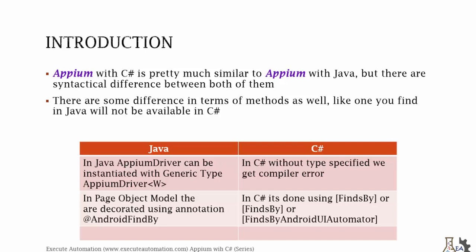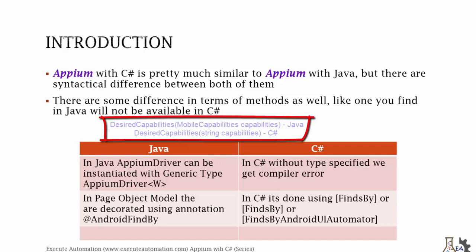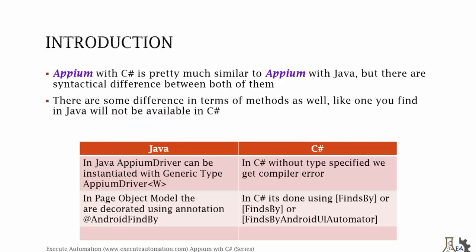Similarly, in Java's Desired Capabilities the method has overloads to accept the MobileCapabilityType, but in the C-Sharp version of Desired Capabilities there is only one overloaded method which takes only the string version of the MobileCapabilityType. These are some minor differences compared to Java. The language bindings are written to be as similar as possible, so there won't be many differences overall.